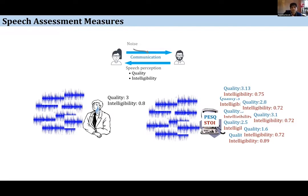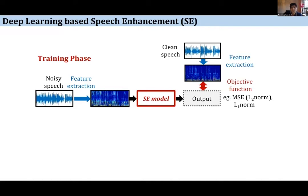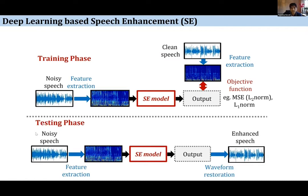In a deep learning-based speech enhancement system, we prepare clean and noisy speech pairs, convert them to Short-Time Fourier Transform representations, and pass them through a deep learning model. The output is compared against the clean STFT spectral features, the difference is computed, and the error is backpropagated to fine-tune the parameters. In the testing phase, the noisy speech is converted to STFT, transformed using the trained model into an enhanced signal, and then inverse STFT is applied to obtain the enhanced speech waveform.